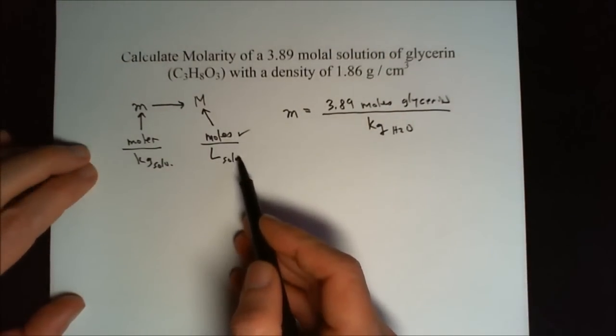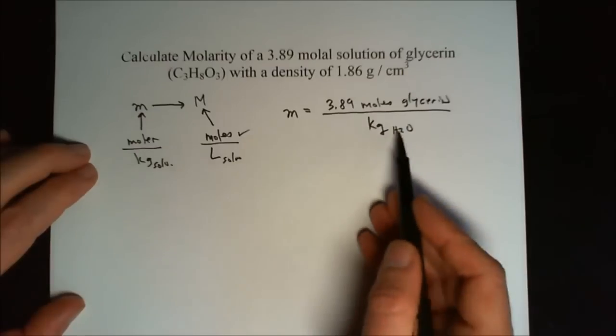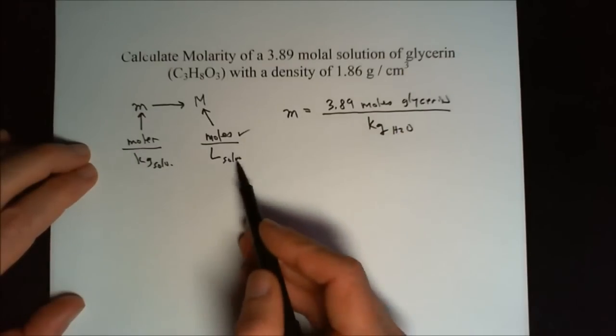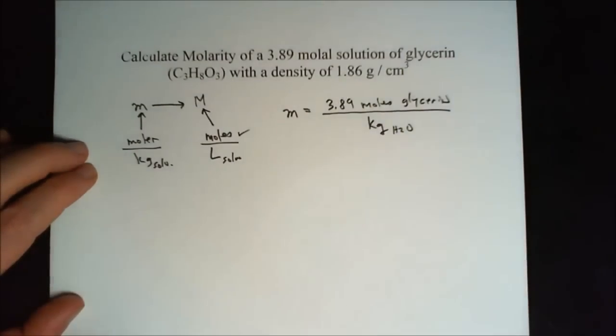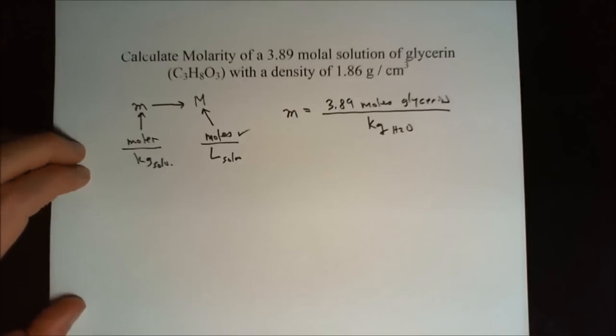Now we need to calculate the liters of solution that we have. We have kilograms of water, and we need liters. It has a density of 1.86 grams per cubic centimeter.